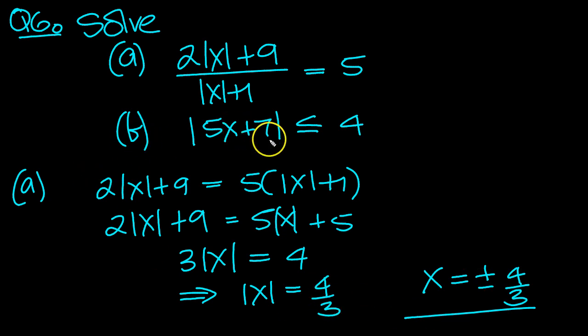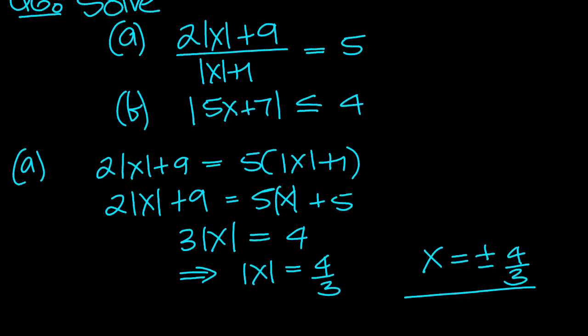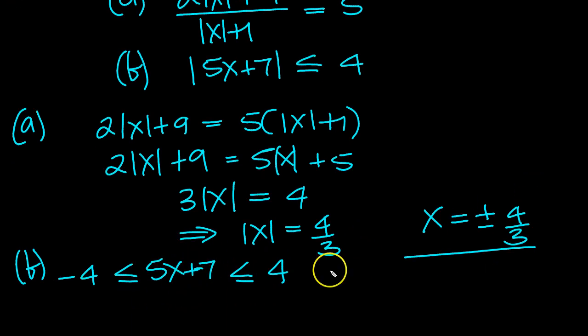So part B, this inequality here—it is a less than or equal to now. So the size of this number is less than or equal to 4. What that means is the number itself, 5x plus 7, can go up to and touch 4 and can go down to and touch minus 4 on the number line. These are the possibilities for this number. So now we've got simple inequalities here.